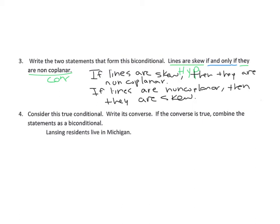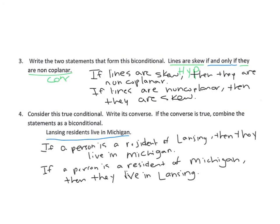Consider this true conditional — a resident of Lansing lives in Michigan — and write its converse. Writing it as a conditional: if a person is a resident of Lansing, then they live in Michigan. We assume this refers to Lansing, Michigan. The converse: if a person is a resident of Michigan, then they live in Lansing — that is false. A counterexample is Detroit or Grand Rapids. Since the converse is false, we cannot write it as a biconditional; both the conditional and converse must be true.